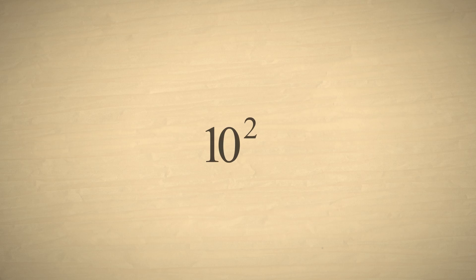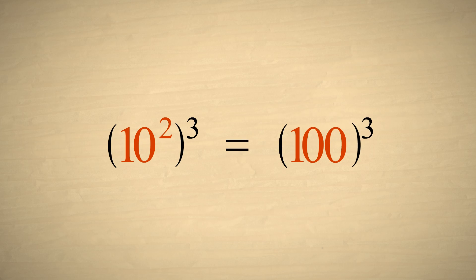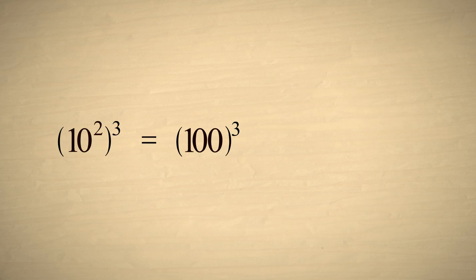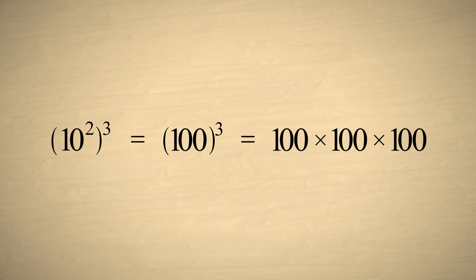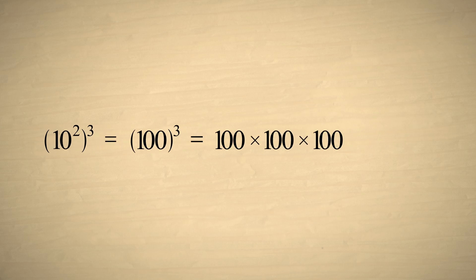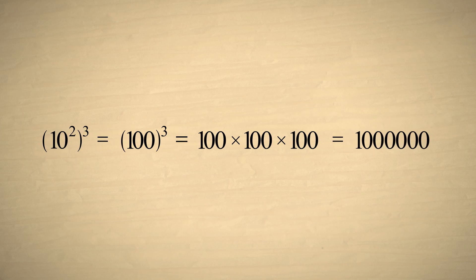For example, if we take ten squared and cube it, this is the same as one hundred cubed, and one hundred times one hundred times one hundred is one million, which is ten to the sixth power.